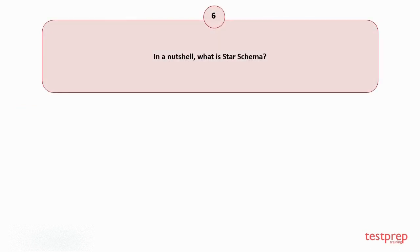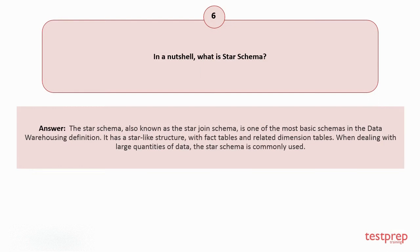Question number 6: In a nutshell, what is star schema? Your answer is: The star schema, also known as the star join schema, is one of the most basic schemas in the data warehousing definition. It has a star-like structure, with fact tables and related dimension tables. When dealing with large quantities of data, the star schema is commonly used.